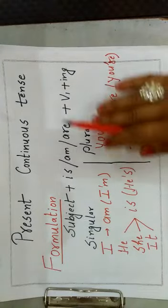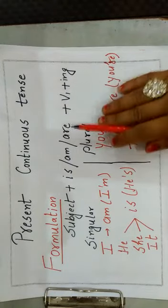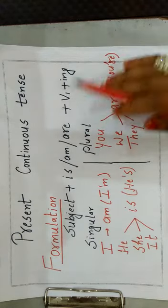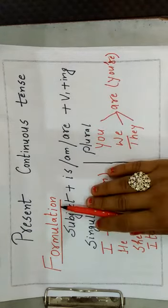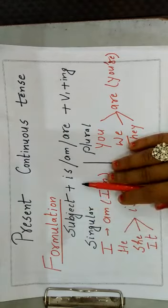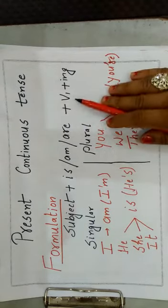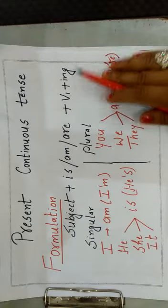as well as for longer action in progress and an action about to take place in the near future. Let's start with the formulation. Subject plus be form of the verb that is is, am, are plus first form of the verb plus ing.